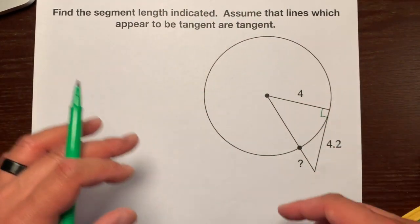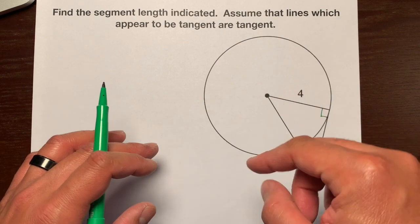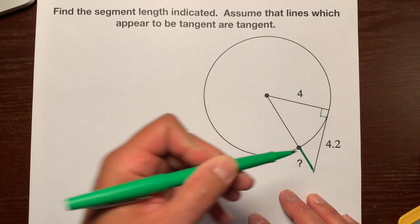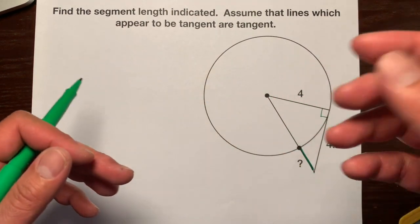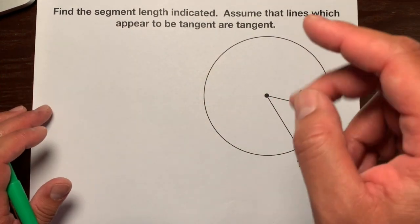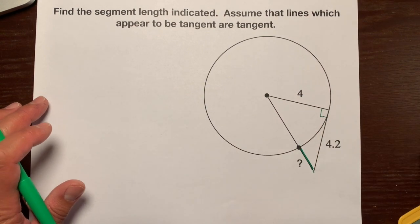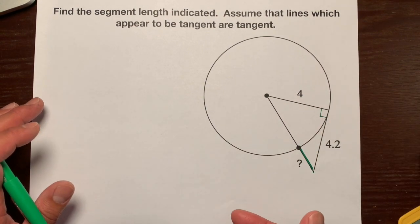So what do we have here? It looks like we have a right triangle. It says find this length right here. This is the question mark. When we have a right triangle and we have at least information about two sides, we can use the Pythagorean theorem. So let's use the Pythagorean theorem.